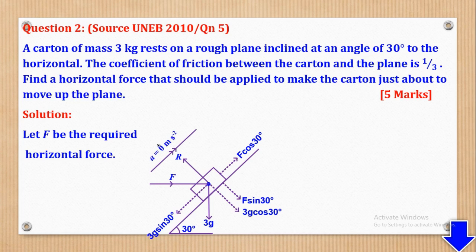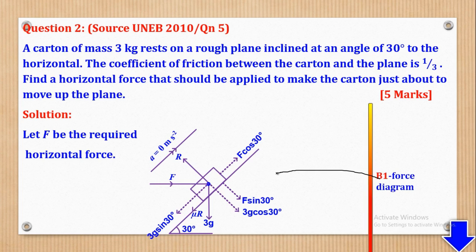It is at the point of moving upwards, so acceleration will be 0 metres per second squared. Because it is at the point of moving upwards, friction will act in the direction downward along the line of greatest slope — that is, mu R in the downward direction. B1 is awarded for the correct force diagram. They want us to find the value of F, the horizontal force required to make the body just about to move.